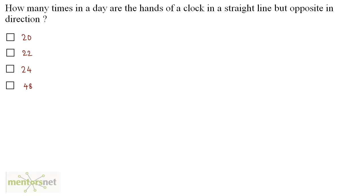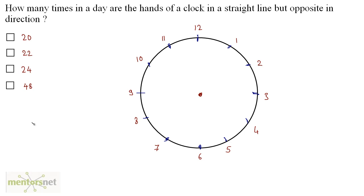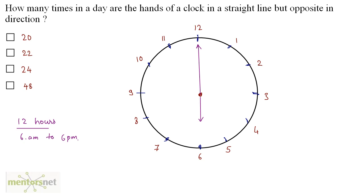How many times in a day are the hands of a clock in a straight line but in opposite directions? For simplicity, let us take a 12-hour duration — say from 6 a.m. to 6 p.m. — then multiply by 2. At 6 a.m. the hands are in a straight line and opposite direction. Now every hour it happens once, and the last position will be at 6 p.m., with the hands in the same position as at 6 a.m.